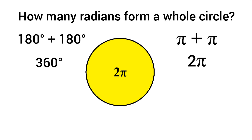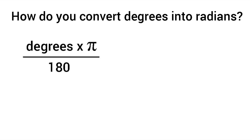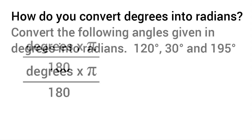Now let's get into converting specific angles. Given any angle in degrees, to convert it into radians you multiply by pi and then divide by 180. Let's go ahead and do three examples.